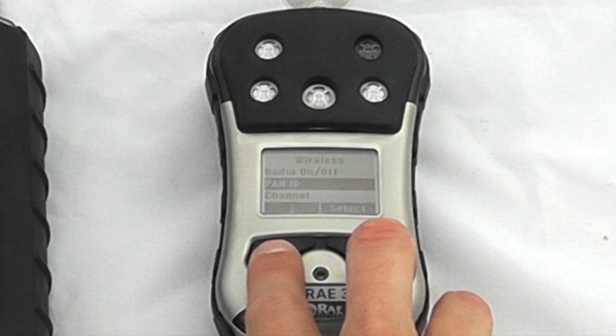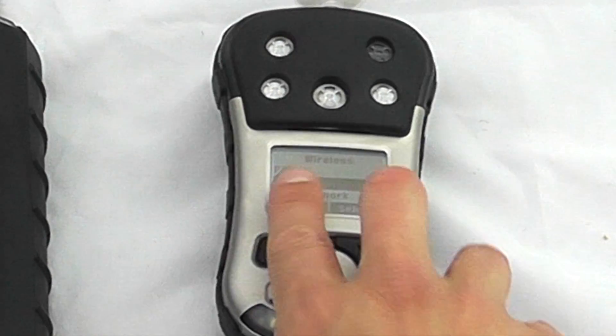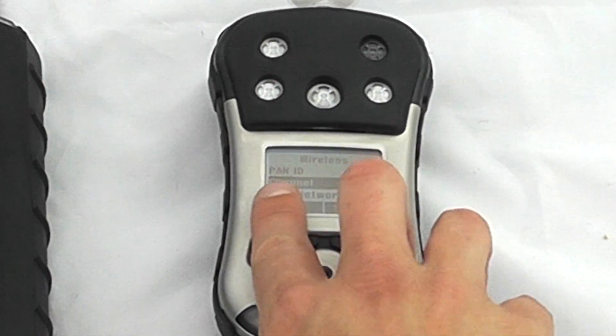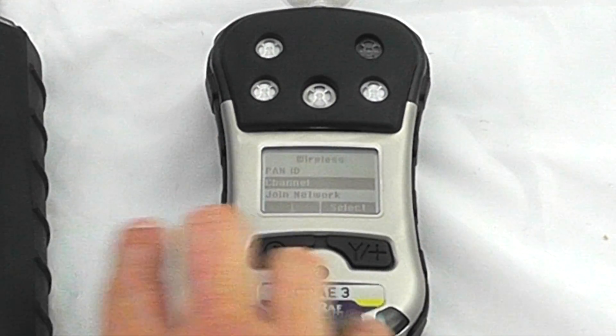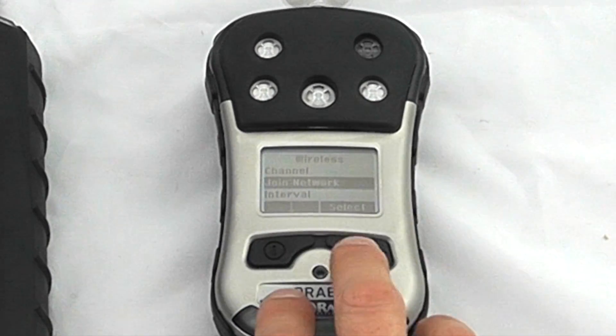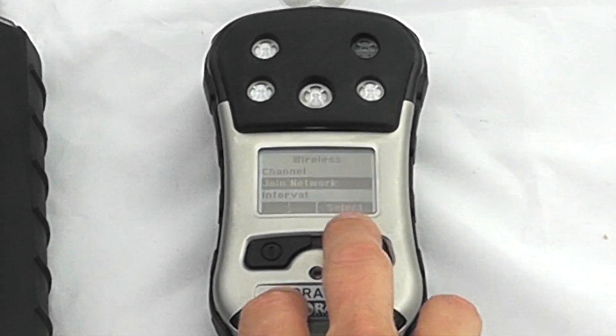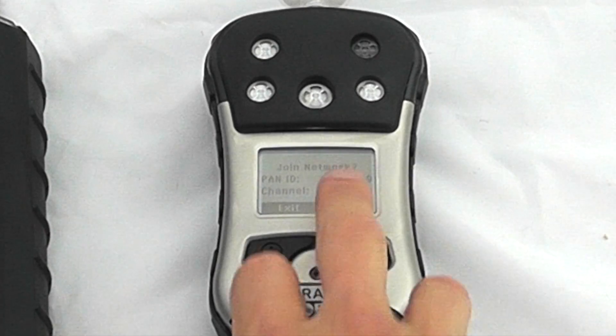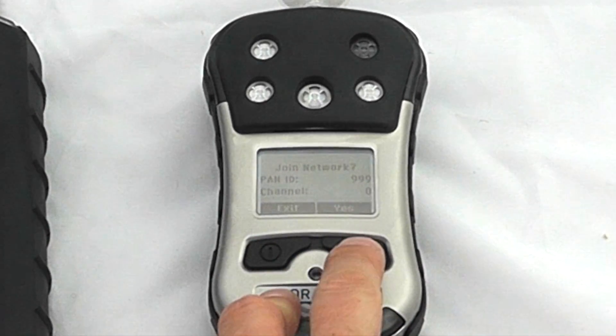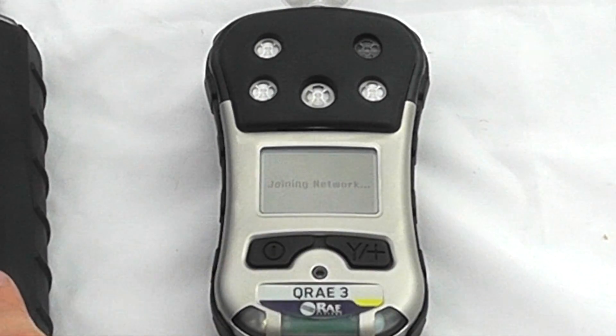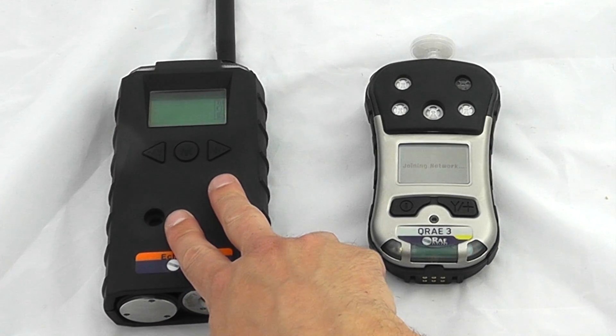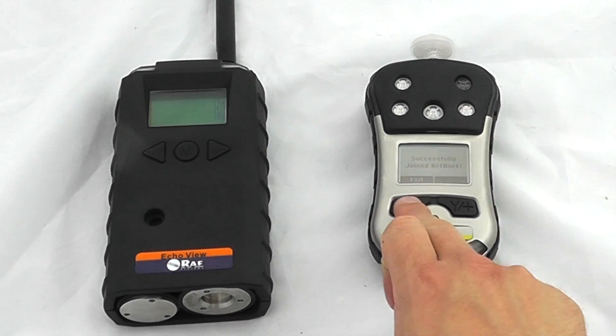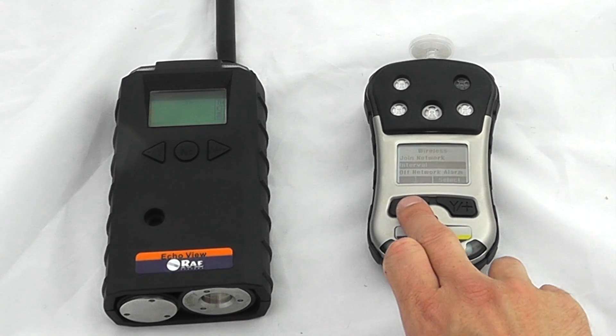Make sure the PAN ID and channels match. My PAN ID is set to 999 and my channel is zero, matching this device. To join the network initially, hit select. The instrument will confirm whether to join—yes, we do. It will then join the network. A closed-loop network is limited to eight different devices. We can see this has successfully joined.